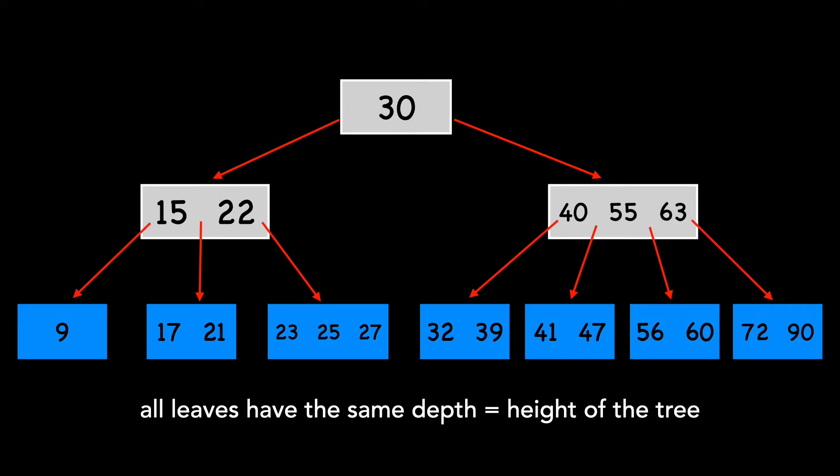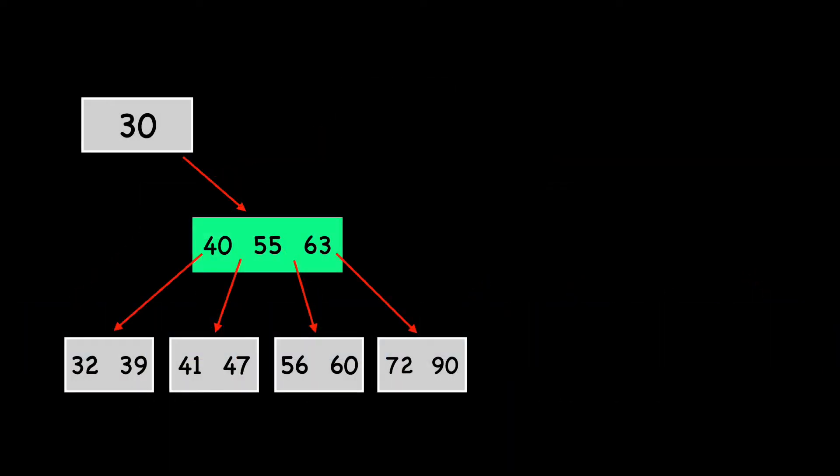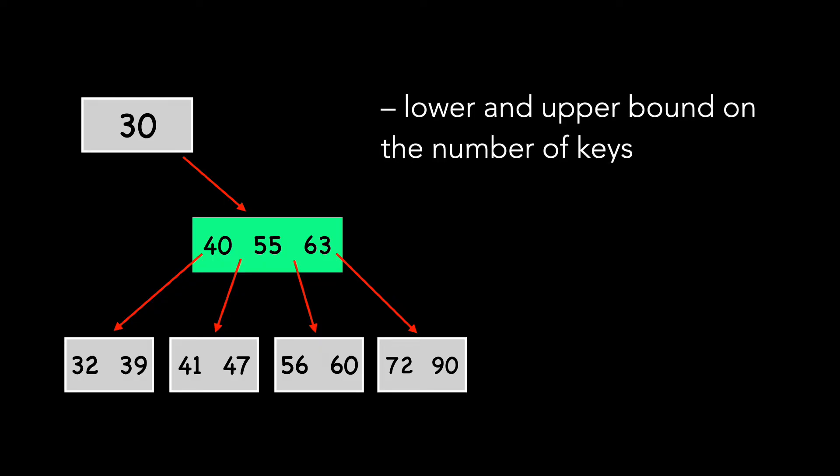Let's discuss a few more characteristics. I'm going to remove the left portion of the tree to make room for text. Every node of a B-tree has a lower and upper bound on the number of keys it may have, which is called the minimum degree of the tree, represented with the letter T.